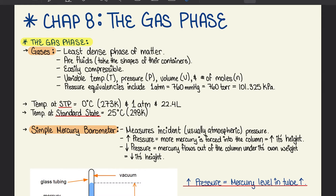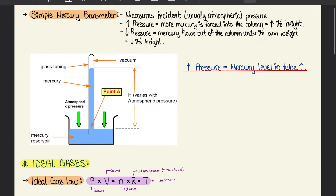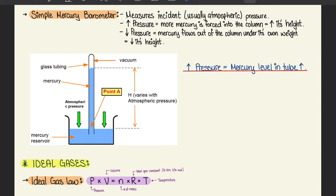Moving on to the simple mercury barometer, it measures the ambient atmospheric pressure. If you increase the pressure, more mercury is forced into the column and that increases its height. Whereas if you decrease the pressure, the mercury flows out of the column under its own weight and it decreases in height. So an increase in pressure means the mercury level in the tube will increase. The more you increase the atmospheric pressure, the more the height of the mercury in the tube will increase. However, if you stop pushing down on the outside, the mercury level in that tube will decrease, and we'll come to a point where it's in equilibrium.